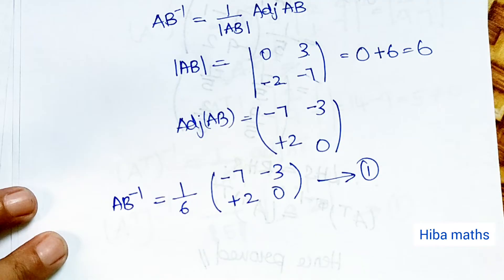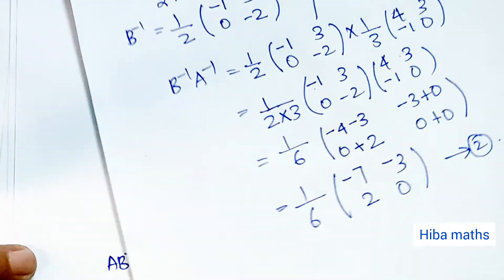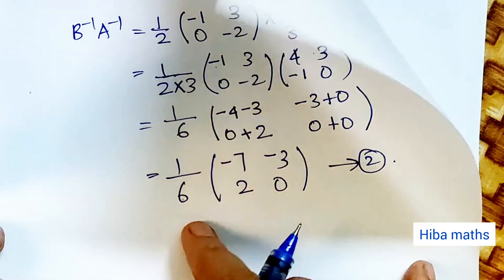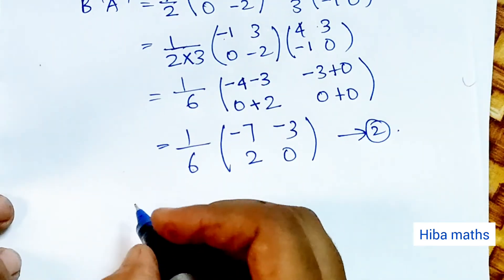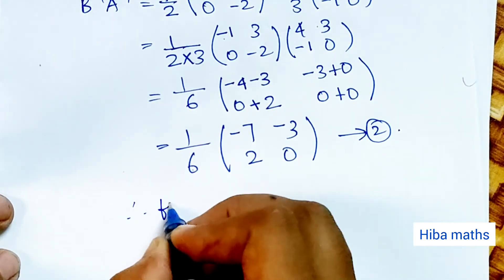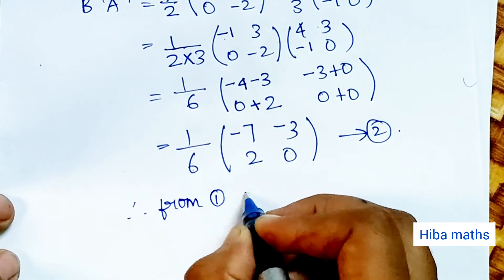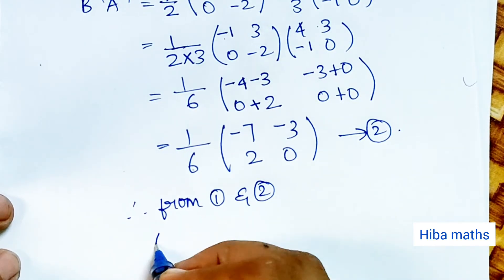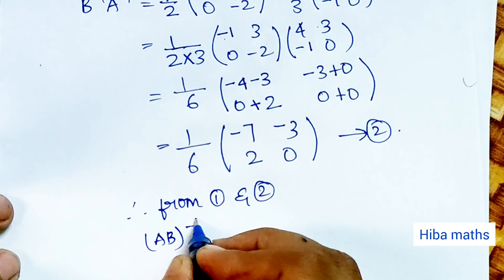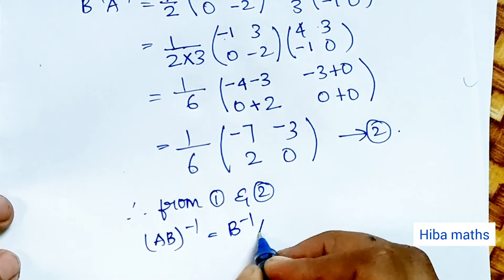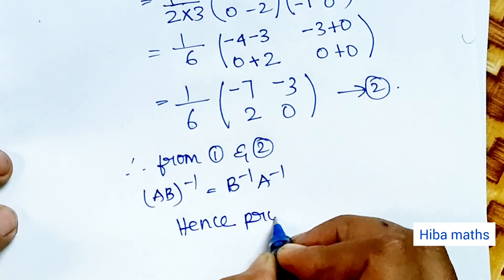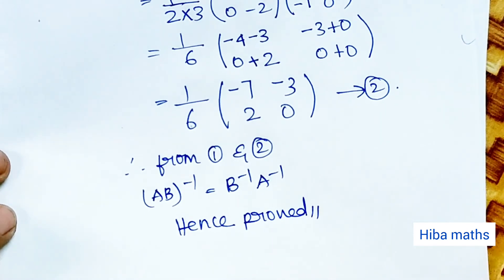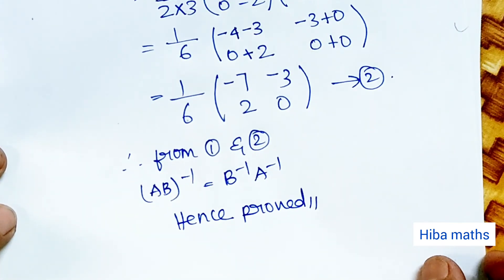The first equation is 1 by 6 [−7, −3; 2, 0] and the second equation is also 1 by 6 [−7, −3; 2, 0]. So 1 and 2 are equal. Therefore, from 1 and 2, AB whole inverse is equal to B inverse into A inverse. Hence proved. Thank you so much for watching.